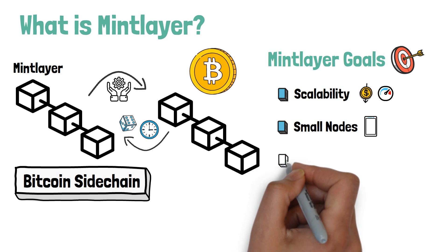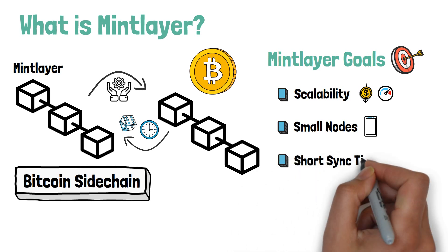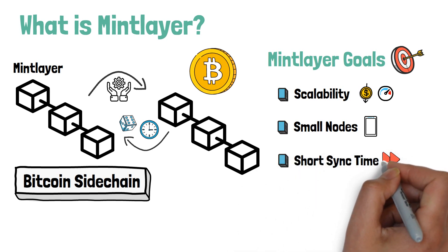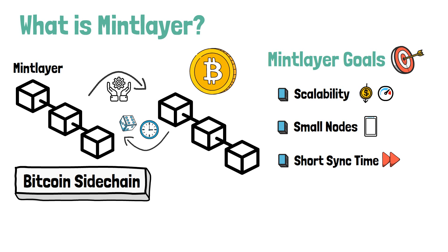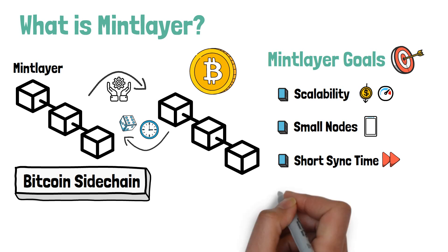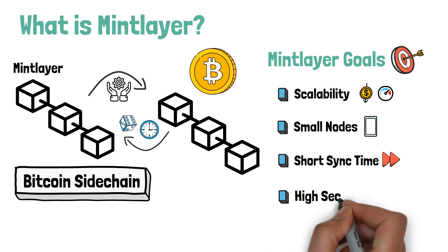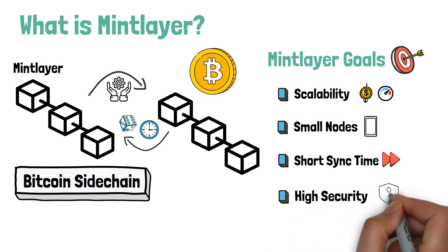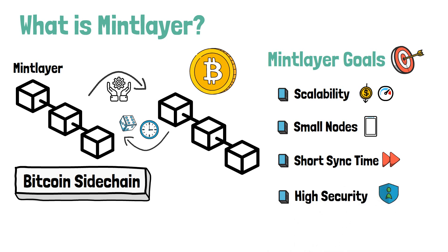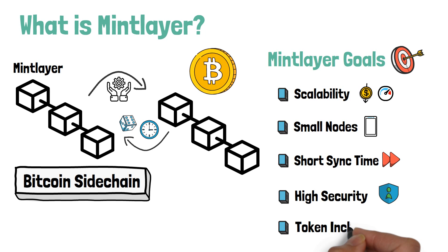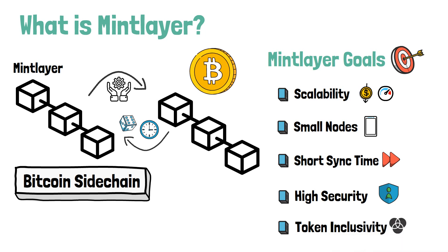Short sync time with the network for new nodes is achieved through pruning and unspent transaction output optimizations. High security fulfills the requirements of future decentralized finance applications through a checkpoint system on the Bitcoin blockchain. Token inclusivity allows users to pay for transaction fees with any token compatible with MintLayer, removing the need to hold a particular token for gas payments as known from other blockchains like Ethereum.